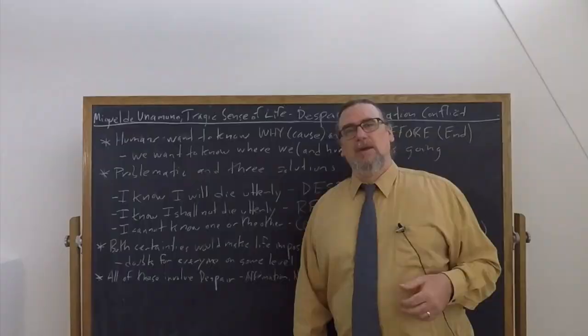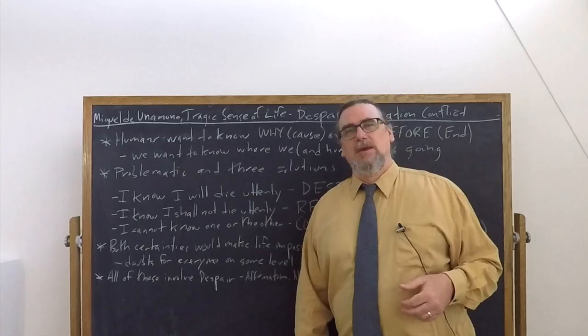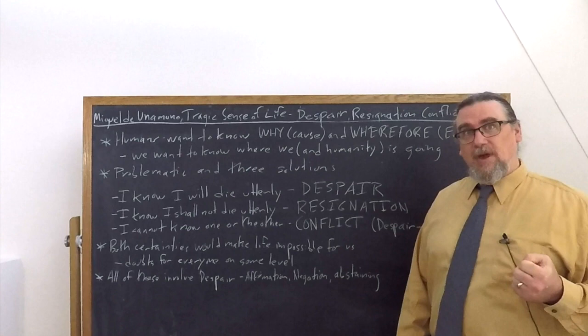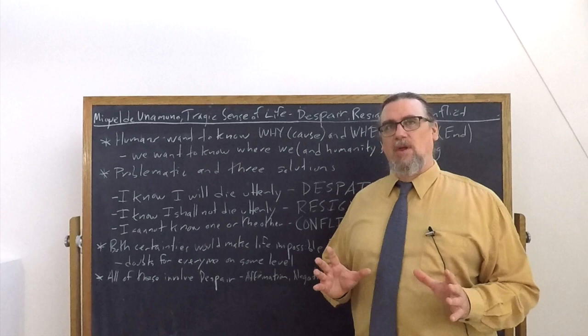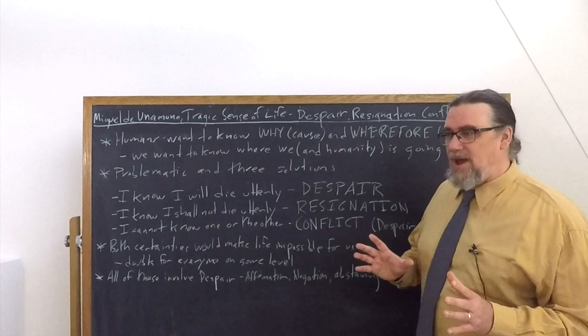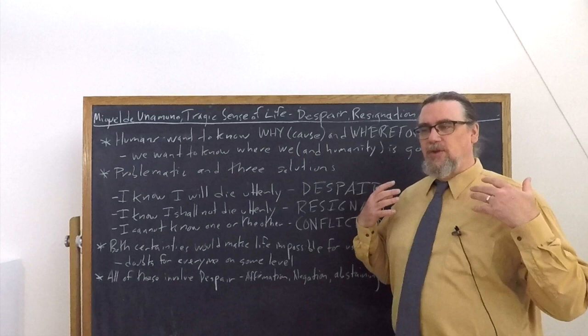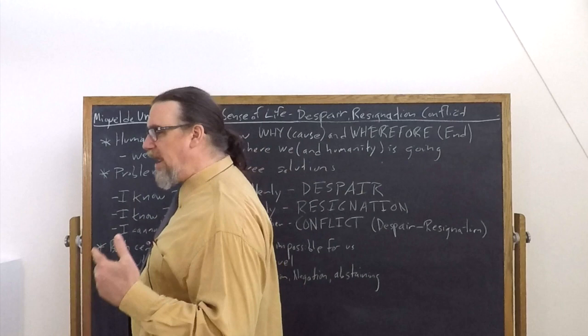In chapters 2 and 6 of Tragic Sense of Life, Miguel de Unamuno is going to set out for us an existentialist problematic that he thinks is largely inescapable and unavoidable for us, however much we might like to deny it.